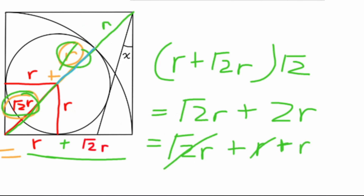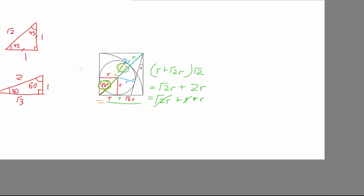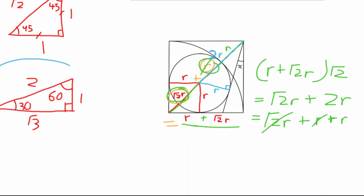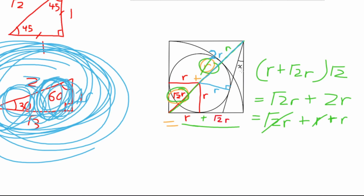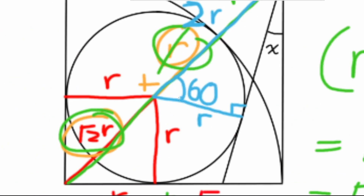Then we draw a line that connects the tangent line to the center of the circle, which is 90 degrees. Drawing this triangle, we can see that it is a right triangle with a hypotenuse of 2r and a side length of r. Since the ratio between the hypotenuse and this side is 2 to 1, that means that the angles of the triangle are 30, 60, and 90 degrees.